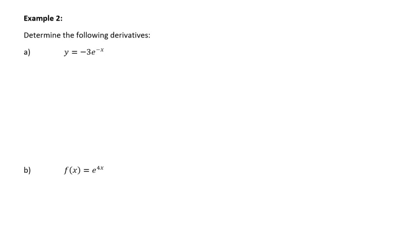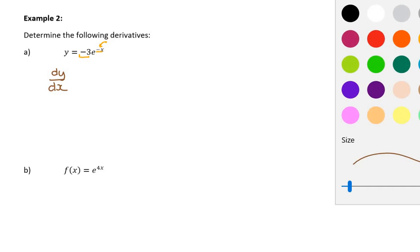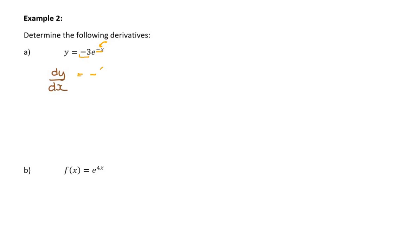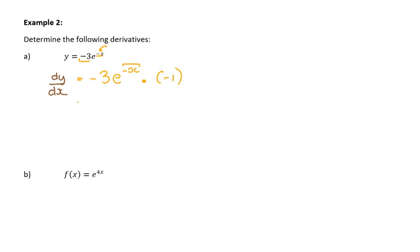Let's look at example 2. This isn't the product rule because the 3 is a constant. However, this is the chain rule because negative x is an inside function. So dy/dx — just to practise notation — don't forget you leave the constant, so this is negative 3, and now I'm differentiating e to the negative x. The outside function is e to the negative x, multiply by the derivative of the inside function, negative x, which differentiates to negative 1. So that's actually 3e to the negative x.